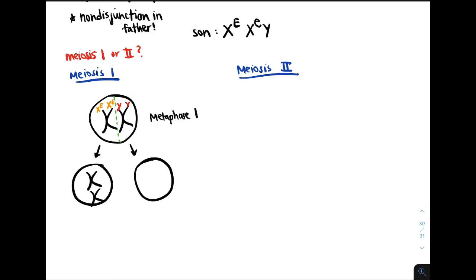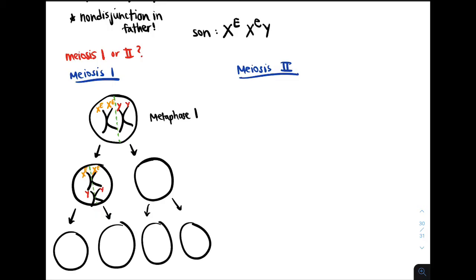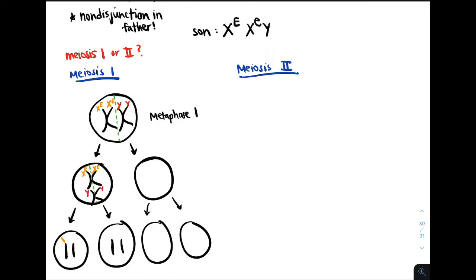Our resulting cells will look like this: on the left we have both chromosomes, and on the right the cell is empty. Then during metaphase 2, the cell is going to split apart, and this time sister chromatids are going to split apart. So the resulting 4 gametes have 2 gametes with the X^E and Y chromosomes, and 2 gametes that are missing chromosomes. If the father contributed one of the two gametes on the left, then he could have been the reason why the son has Klinefelter syndrome.